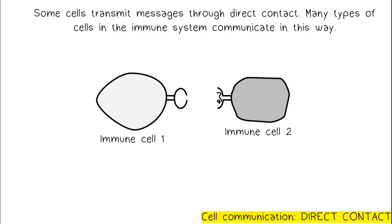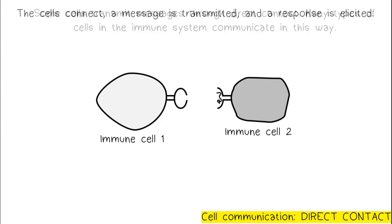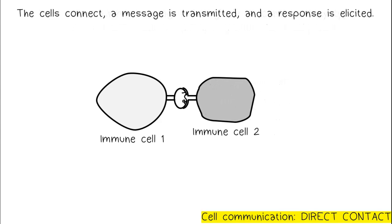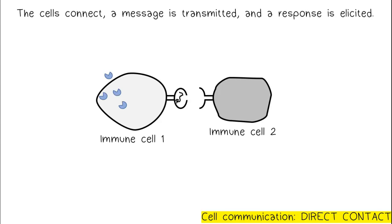Some cells transmit messages through direct contact. Many types of cells in the immune system communicate in this way. The cells connect, a message is transmitted, and a response is elicited.